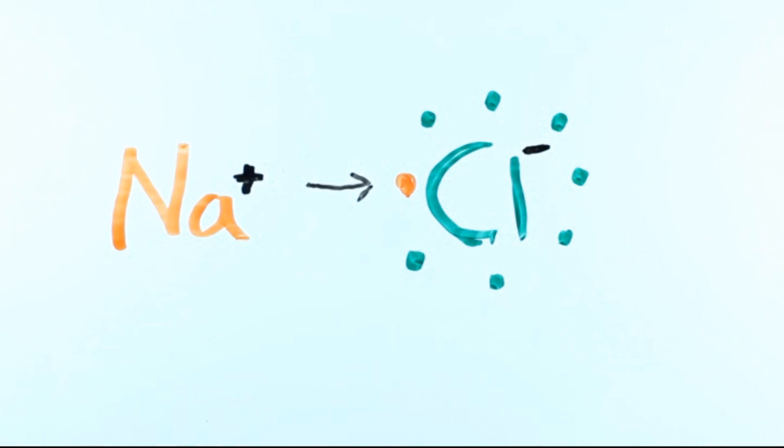Because the chlorine is gaining an electron and electrons have a negative charge, the chlorine atom now has a negative charge. Because the sodium atom loses an electron, it gets a positive charge, since subtracting a negative is the same as adding a positive.